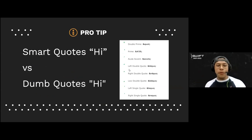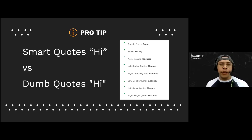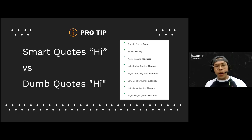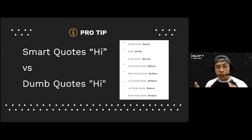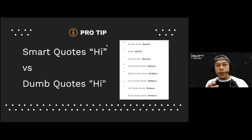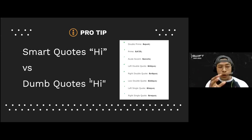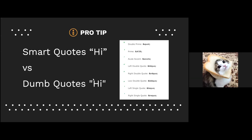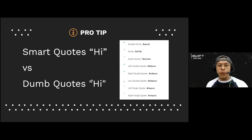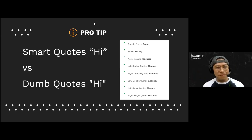A quick pro tip: understand the differentiation between smart quotes and dumb quotes. If you write code in a word processor like Word and transfer it to Visual Studio Code, the word processor will actually change the double primes you'd normally use in code into grammatical quotes. The programming language will not register them when you transfer back, so you'll run into errors. Make sure you always have straight double primes when coding.